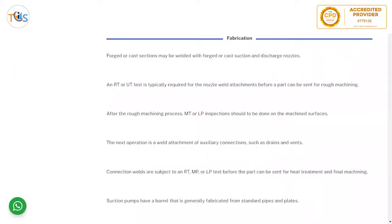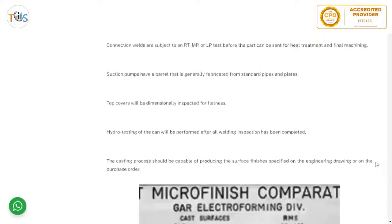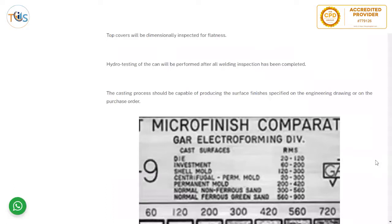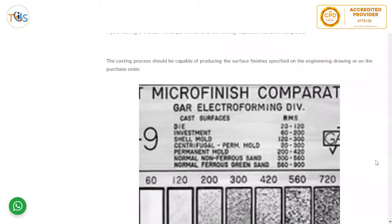Fabrication — forged or cast sections may be welded with forged or cast suction and discharge nozzles. An RT or UT test is typically required for the nozzle weld attachment before a part can be sent for rough machining. After rough machining, MT or liquid penetrant inspection should be done on the machined surfaces. The next operation is weld attachment of auxiliary connections such as drains and vents. Connection welds are subject to RT, MP, or LP test before the part can be sent for heat treatment and final machining. Suction pumps have a barrel generally fabricated from standard pipes and plates, and top covers will be dimensionally inspected for flatness. Hydro testing of the casing can be performed after all welding inspections have been completed.